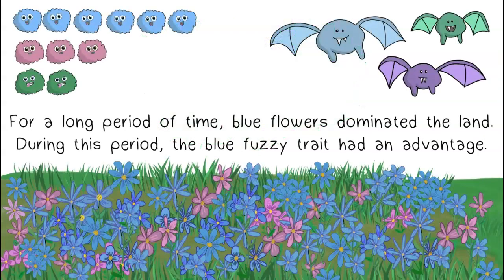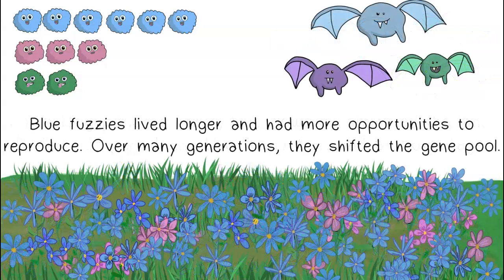For a long period of time, blue flowers dominated the land. During this period, the blue fuzzy trait had an advantage. Blue fuzzies lived longer and had more opportunities to reproduce. Over many generations, they shifted the gene pool.